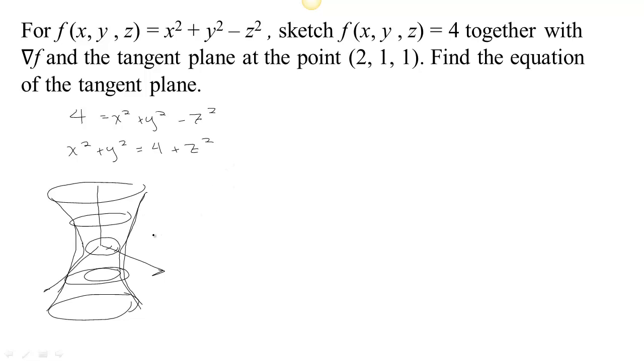Now we want to find the tangent plane at a particular point. This is actually a point on this particular level set, because if we make x=2, y=1, and z=1, we have 4 plus 1 minus 1, so that's 4. So this is a point on that level set.